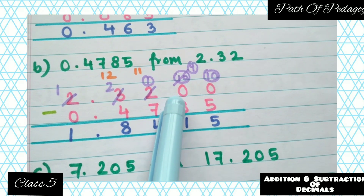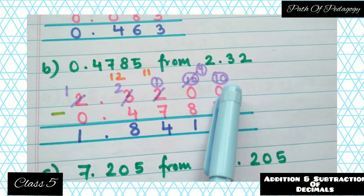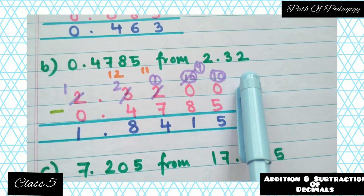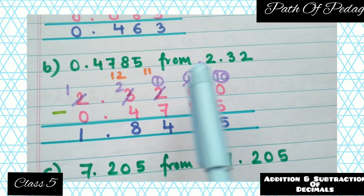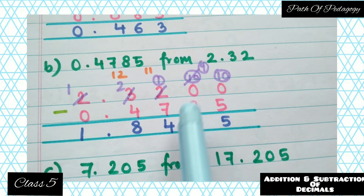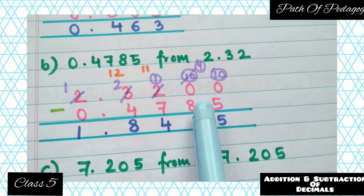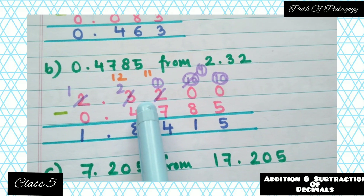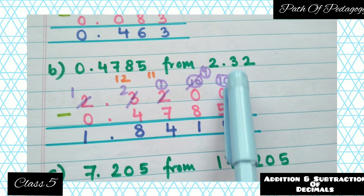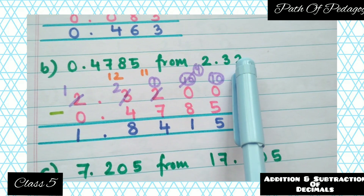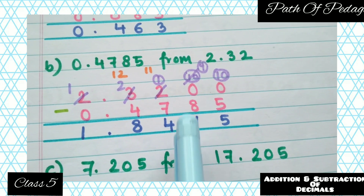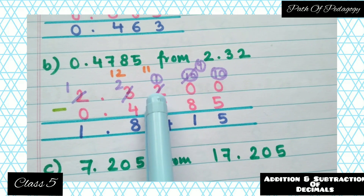We have added two zeros to the extreme right of 2.32 to make it 2.3200. Now subtract: 0−5 — zero is less than five, so borrow from the previous column to make it 10; 10−5=5. Next 0−8 — can't subtract, so borrow again to make it 10; but we already borrowed from this column, so it becomes 9; 9−8=1.